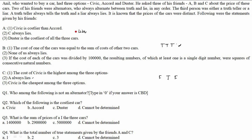So A cannot be a truth teller, B cannot be a truth teller, C cannot be a truth teller. This means one of A, B, or C must be a liar. Let's now check each case. If A is a liar, all statements given by A should be false, and then B and C should both be alternators.